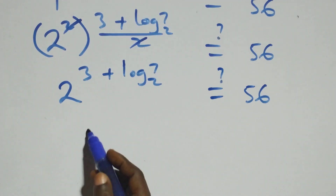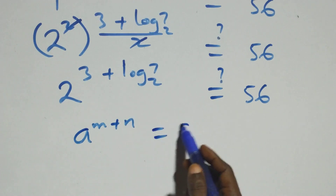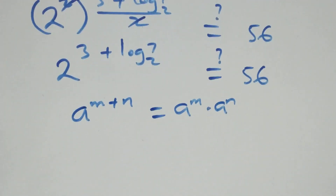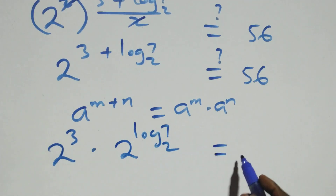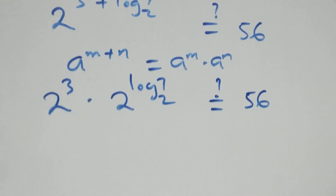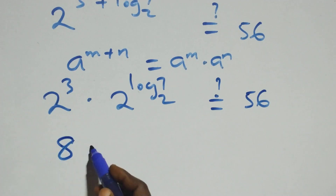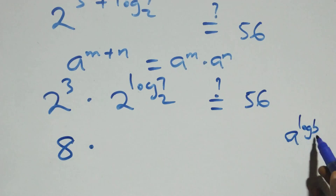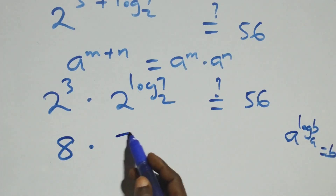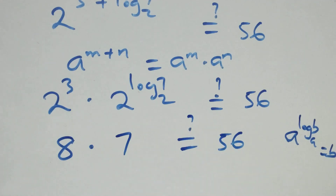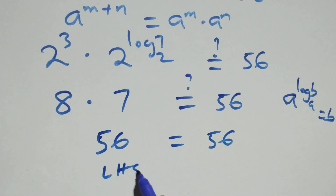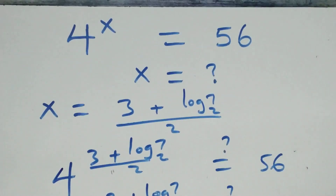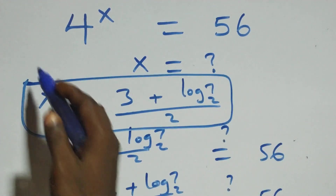We apply the exponent rule: a raised to power (m plus n) equals a raised to m times a raised to n. So we have 2 cubed times 2 raised to power log 7 base 2. Since 2 cubed equals 8, and using the identity a raised to log base a of b equals b, we get 8 times 7, which equals 56. The left-hand side equals the right-hand side, therefore x equals 3 plus log 7 base 2, all over 2, satisfies the given problem.